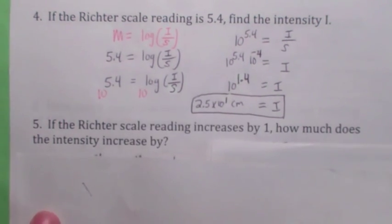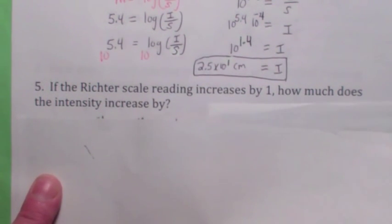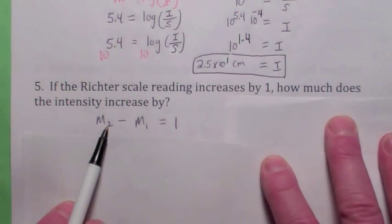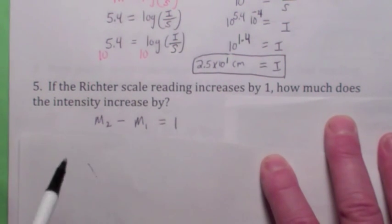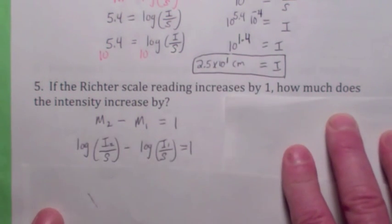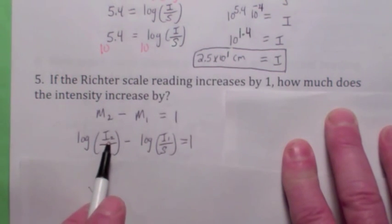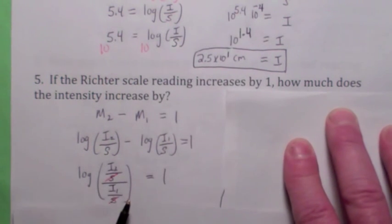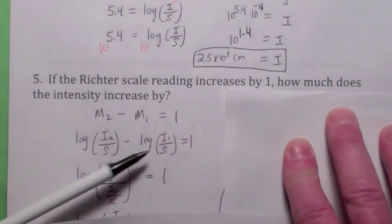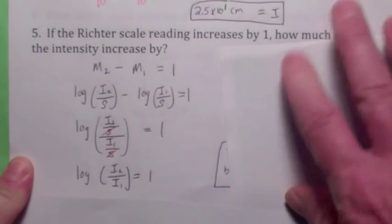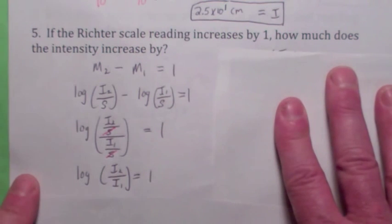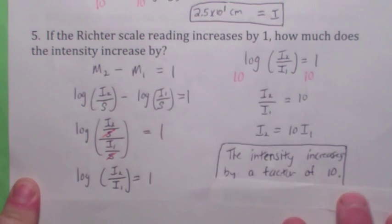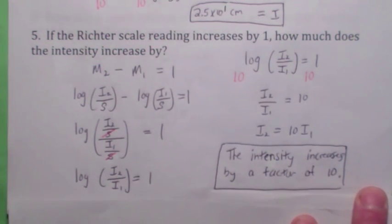Here's an interesting question — if the Richter scale increases by 1, how much does the intensity increase by? Suppose two Richter scale readings M2 and M1 differ by 1. Using the definition, M2 minus M1 equals log(I2/S) minus log(I1/S) equals 1. Using logarithm rules, combine these as a quotient — the S cancels, leaving log base 10 of I2 over I1 equals 1. Raise 10 to each side: I2 over I1 equals 10. So I2 equals 10 times I1 — whenever the Richter scale reading increases by 1, the intensity goes up by a factor of 10. It's 10 times stronger.